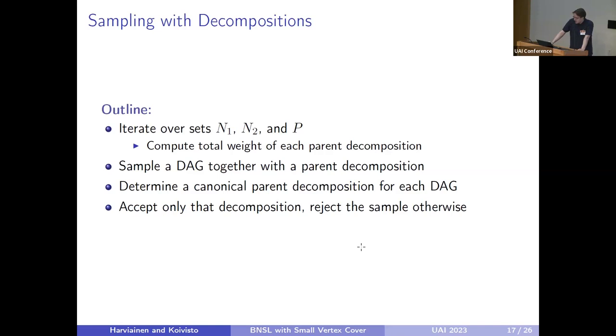The main idea within the sampling is that we iterate over all possible parent decompositions, such that we compute the total weights of each parent decomposition. After this pre-computation step, we sample first a parent decomposition, and then a DAG from that parent decomposition. By beforehand determining some unique canonical parent decomposition for each DAG, we accept that DAG if and only if it comes from that parent decomposition, and otherwise we reject it and draw another sample. This fixes the distribution of DAGs.